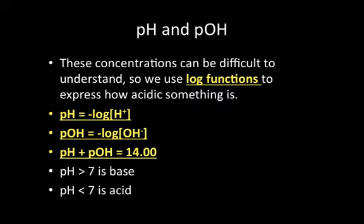One important thing: pH is a log-based function driven by the power of 10. So an acid with a pH of 1 is 10 times more acidic than one with a pH of 2. Comparing pH 1 to pH 3, that's 100 times more acidic. Make sure you understand that these log-based functions have a really big impact on how acidic something truly is.